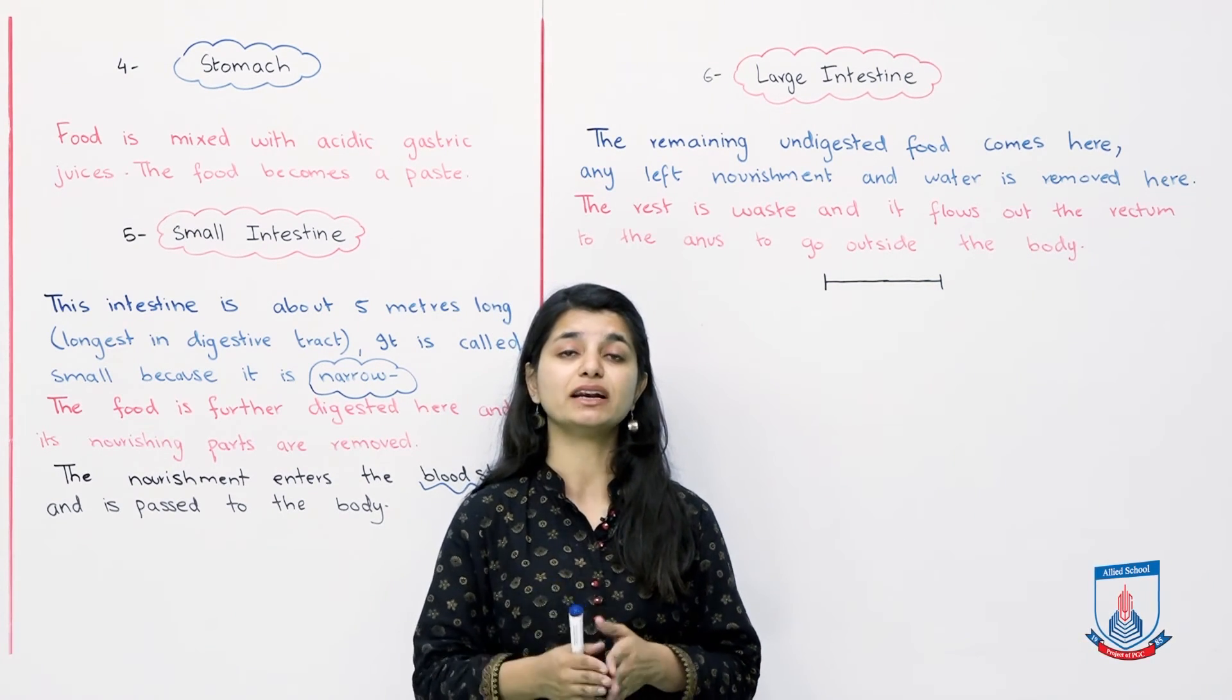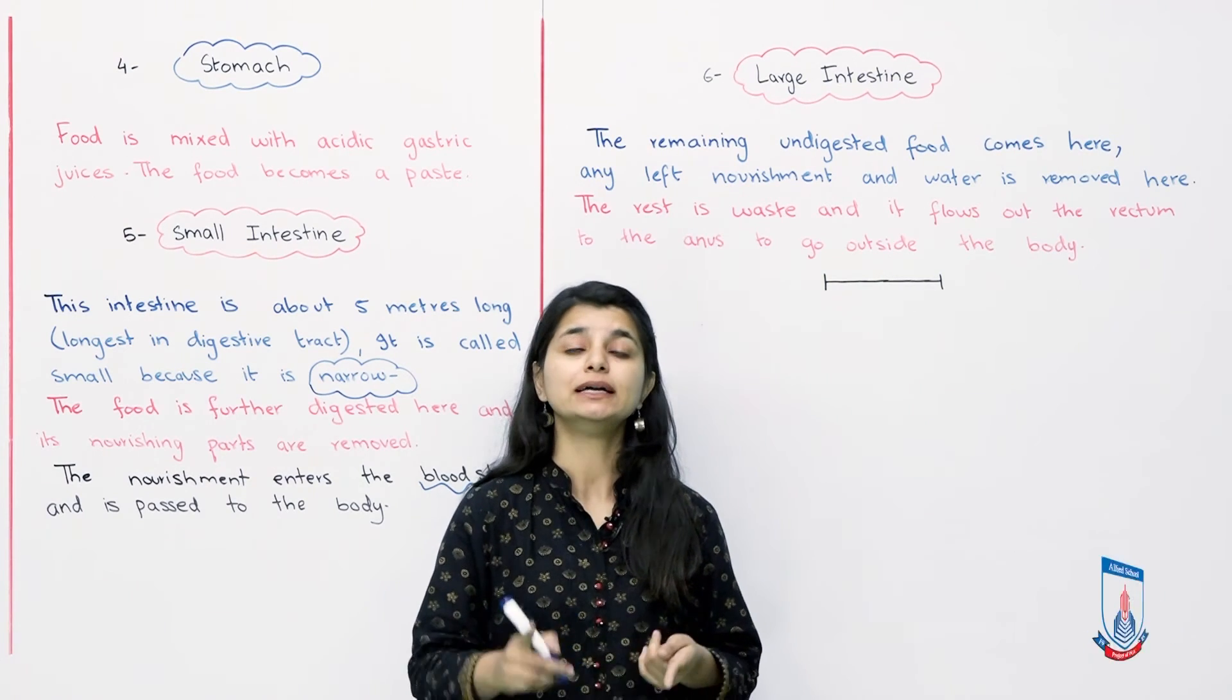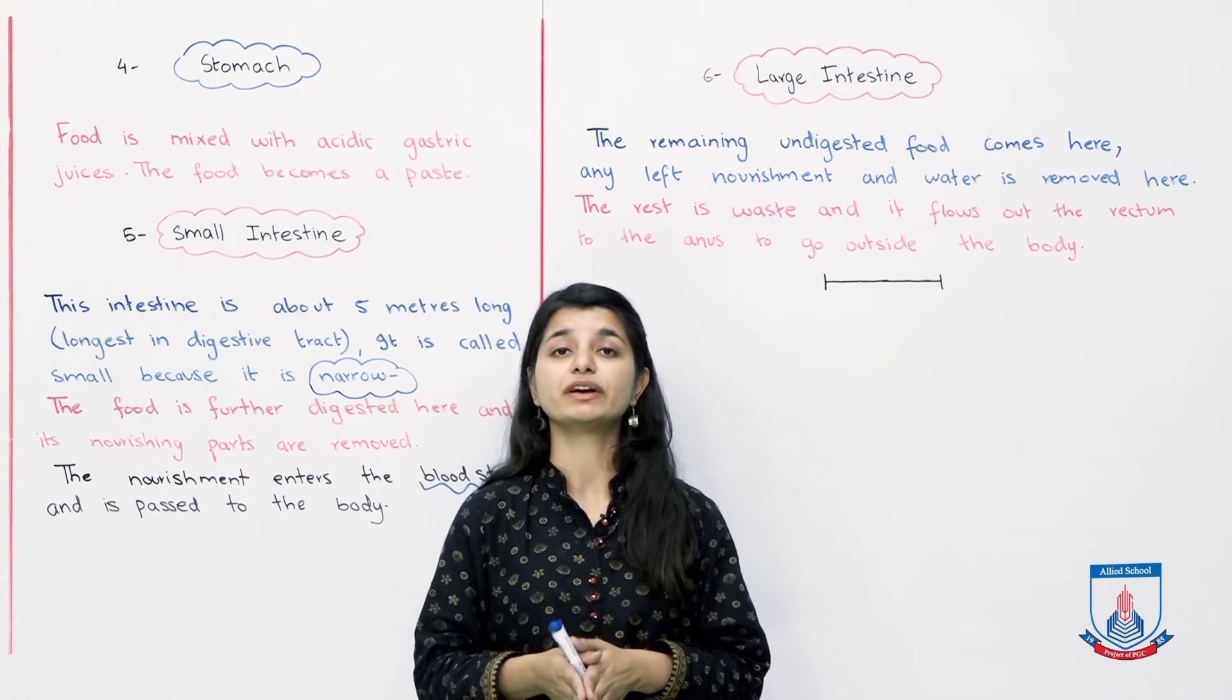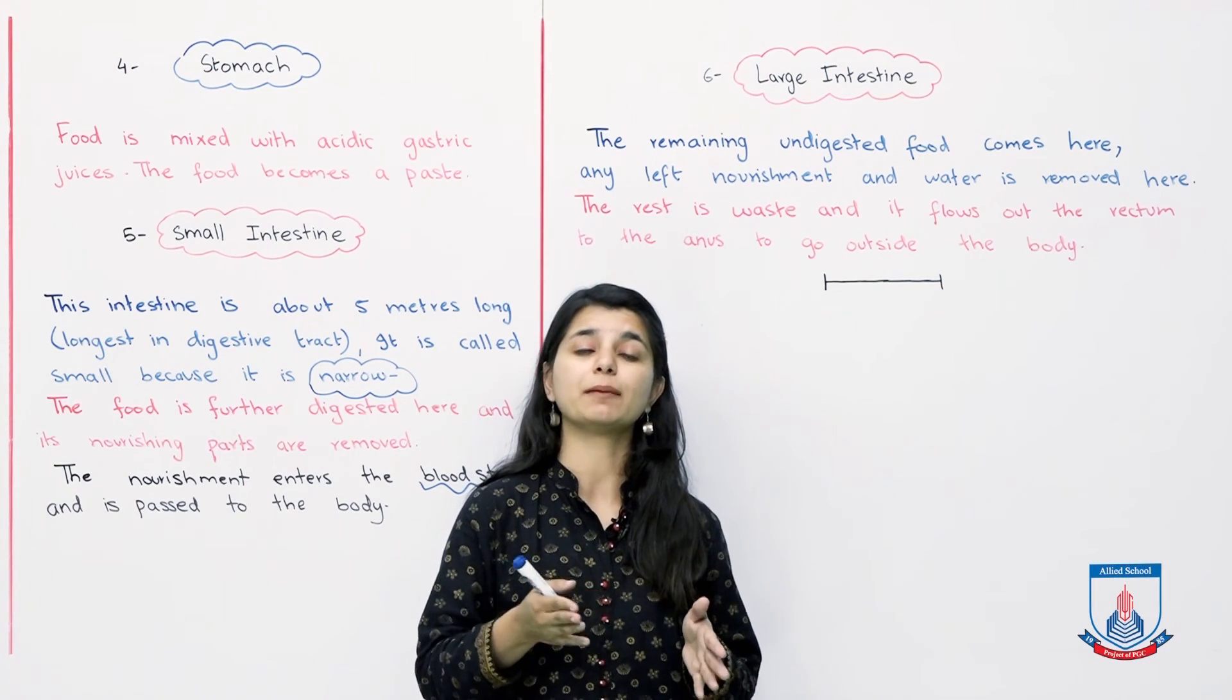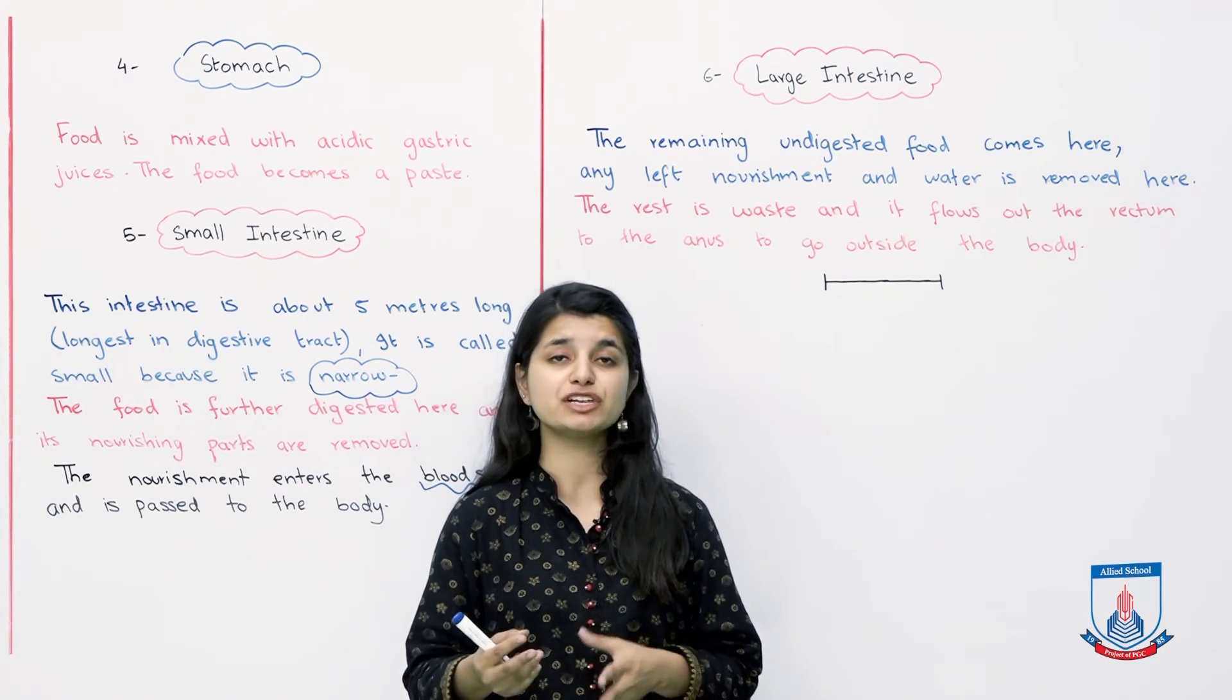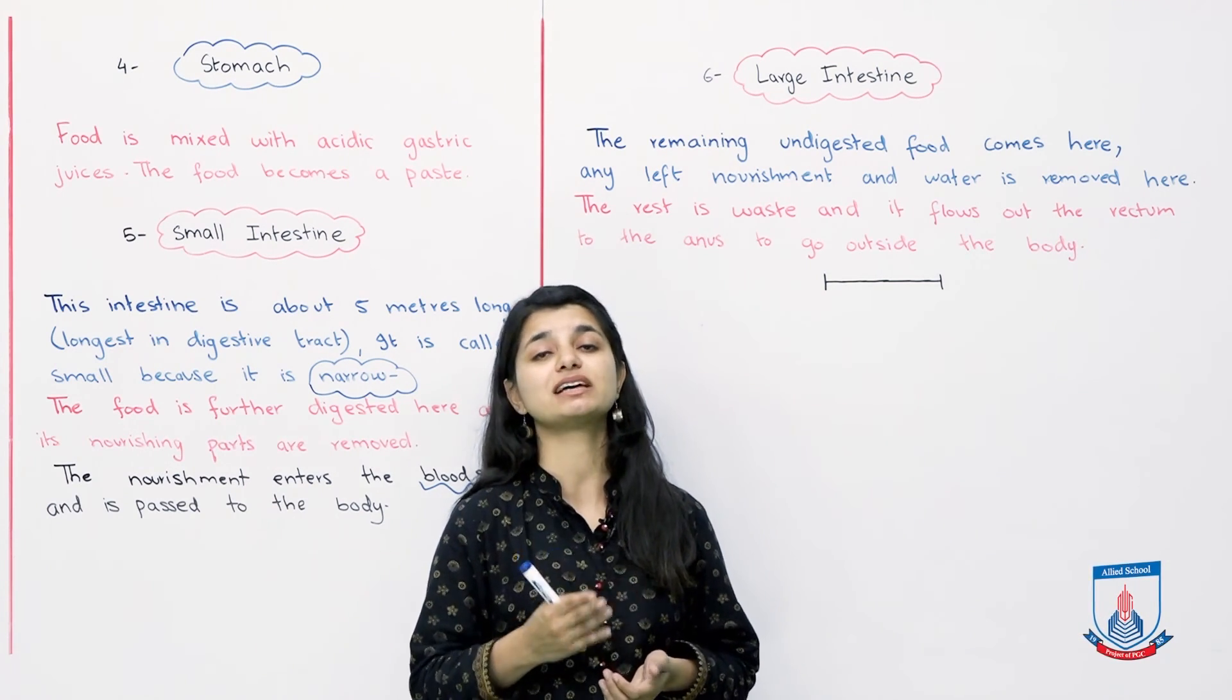A quick recap: we studied seven steps in which food gets digested inside our body in the digestive tract. Food enters the mouth, tongue and teeth break it down, then it goes through the esophagus. When it reaches the stomach, gastric juices change it into a paste. Then it enters the small intestine where nutrients are extracted and passed to the bloodstream. Lastly, it goes to the large intestine where the rest of the nourishment and water are removed.